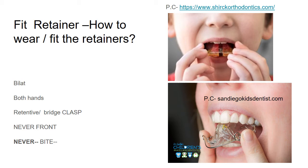Advise patients not to position the removable plate or retainer by holding the front wires, because front wires are delicate. If they incorporate bends, your teeth will move in the wrong direction and orthodontic treatment will have to be repeated. In the pictures shown, the child in the upper image uses both hands but grips the front wire — incorrect. The child in the lower image holds the Adams clasp region correctly but uses only one hand.